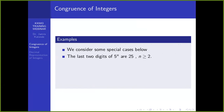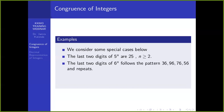We look at a few more special cases. Anytime you have 5 raised to some positive integer, the last two digits will be 25. The last two digits of 6 raised to n follow this pattern: 36, 96, 76, and 56, then it repeats after that. So these are the last two digits of 4 consecutive powers of 6, and then the next 4 consecutive powers of 6 will have the same sequence as the last two digits.